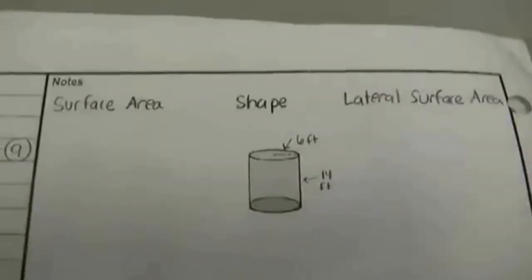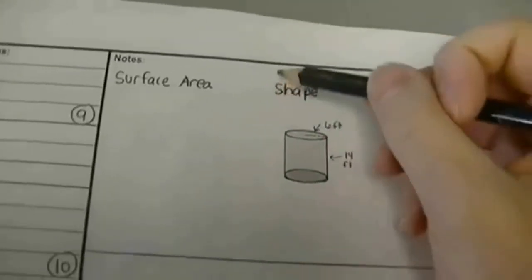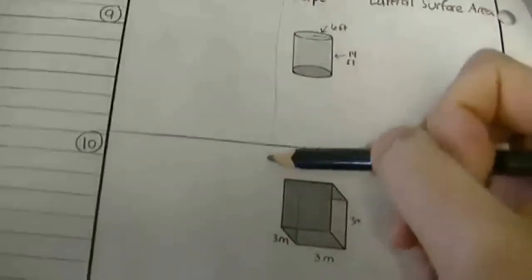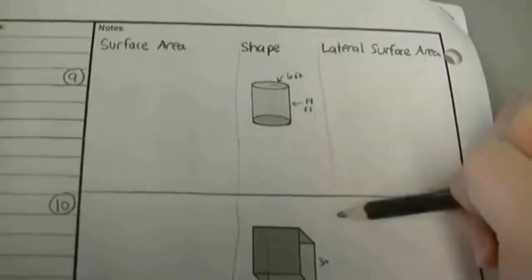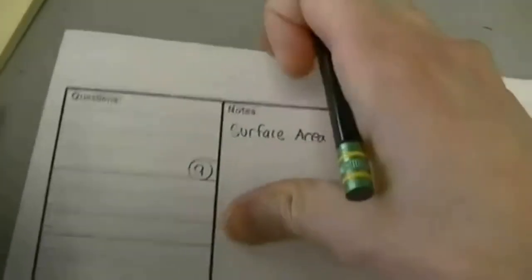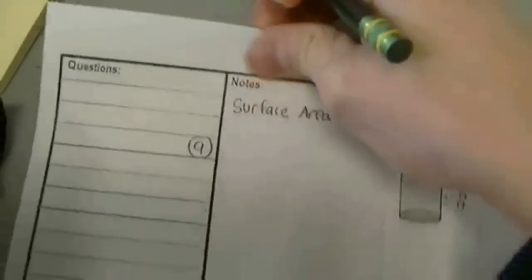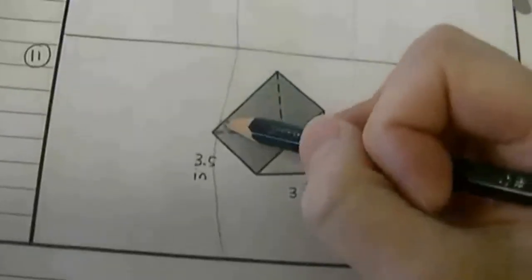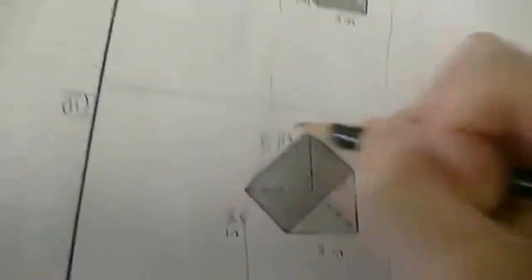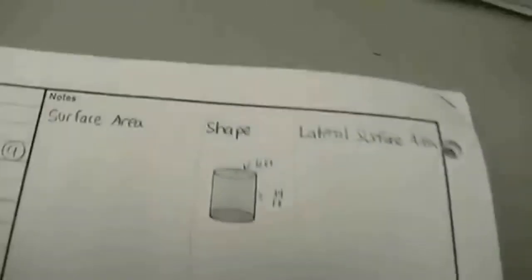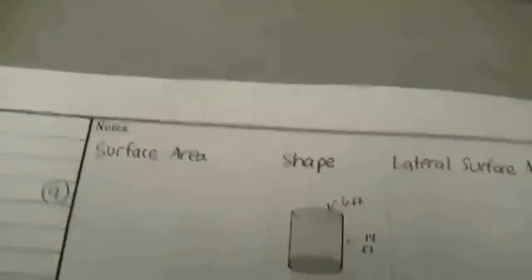Surface area and lateral surface area again — same situation as the previous page, just practice finding those. You should pause the video and try this on your own. The only thing I need to tell you: I forgot to give you this length — that's 5 inches. I think that's the only other typo I had.